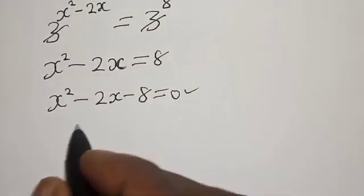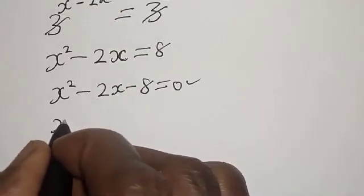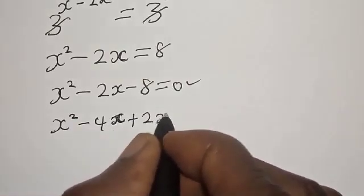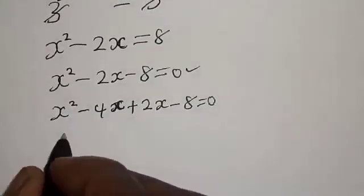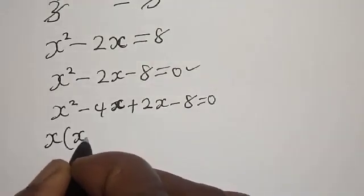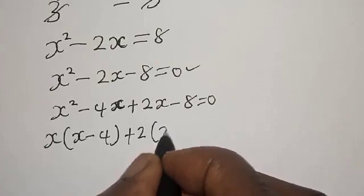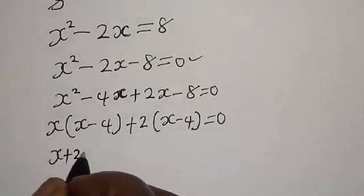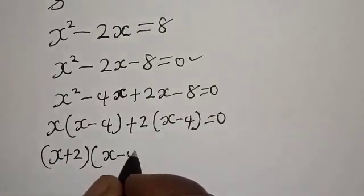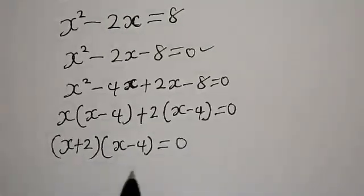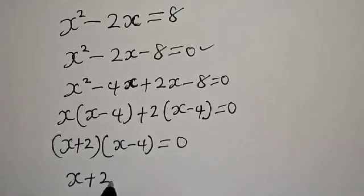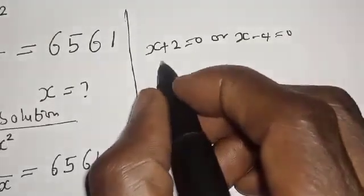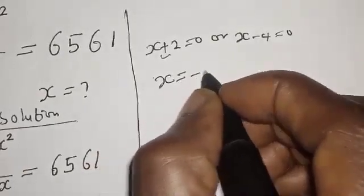I'm going to use the factorization method. We have S squared minus 4S plus 2S minus 8 is equal to 0. Then we have S times (S minus 4) plus 2 times (S minus 4) is equal to 0. Then we have (S plus 2)(S minus 4) is equal to 0. So S plus 2 equals 0 or S minus 4 equals 0, giving S is equal to minus 2.